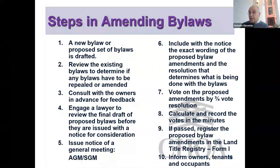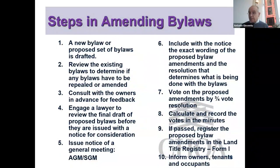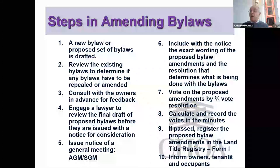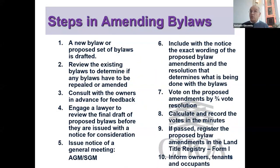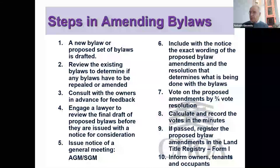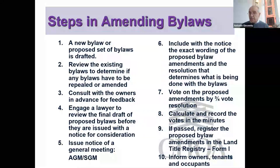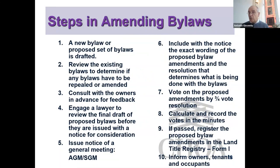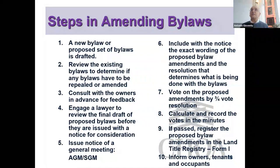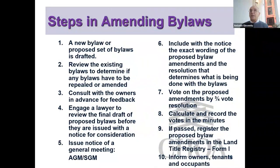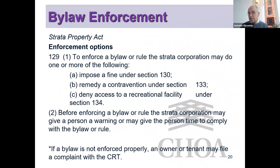Issue the notice of general meeting and include with the notice both the exact wording of the proposed bylaws and the resolution. You vote on proposed amendments by voting on the resolution. Calculate and record the votes in the minutes — bylaw amendments are not ones I would simply declare have passed; I would always take a precise count. If they're passed, register them in the land title form. Do it within seven days; past seven days, someone will forget, and you'll end up trying to enforce a bylaw that nobody ever filed. Always inform the owners and tenants.